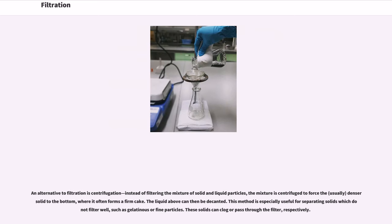An alternative to filtration is centrifugation. Instead of filtering the mixture of solid and liquid particles, the mixture is centrifuged to force the, usually, denser solid to the bottom, where it often forms a firm cake. The liquid above can then be decanted. This method is especially useful for separating solids which do not filter well, such as gelatinous or fine particles. These solids can clog or pass through the filter, respectively.